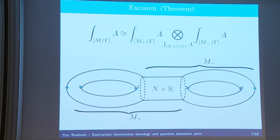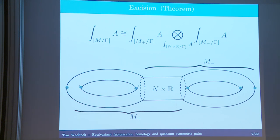The key property that actually allows us to make computations is so-called tensor excision. If we have some global quotient that we divide up into two pieces — a gamma-invariant piece M-plus and a piece M1 — and they intersect over a collar gluing which is a product N cross R, what's important is that this R direction receives the trivial action from gamma. That means the invariant assigned to this collar gluing has a natural E1 structure coming from the R direction, so there's an associative algebra structure. It acts on the invariants left and right by embedding that collar piece into either chunk, so we can compute the invariant as a relative tensor product.